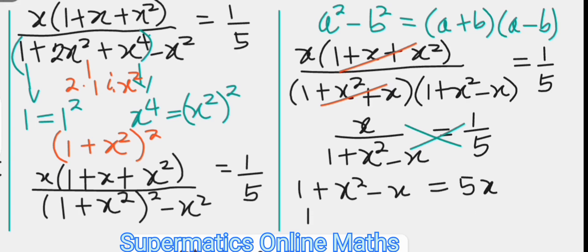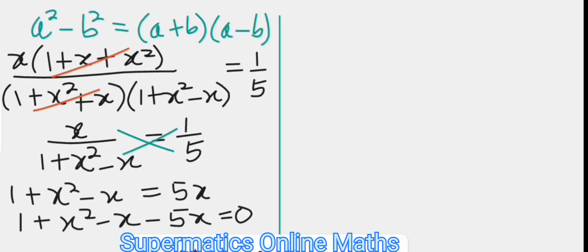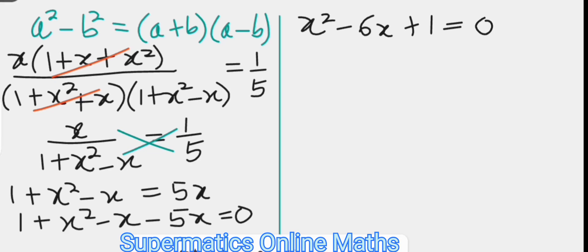Subtracting 5x from both sides gives 1 plus x squared minus x minus 5x equals zero. Rearranging, we have x squared minus 6x plus 1 equals zero. We have successfully reduced the entire exponential equation into a quadratic equation, and a look at this shows we cannot solve it by factoring.